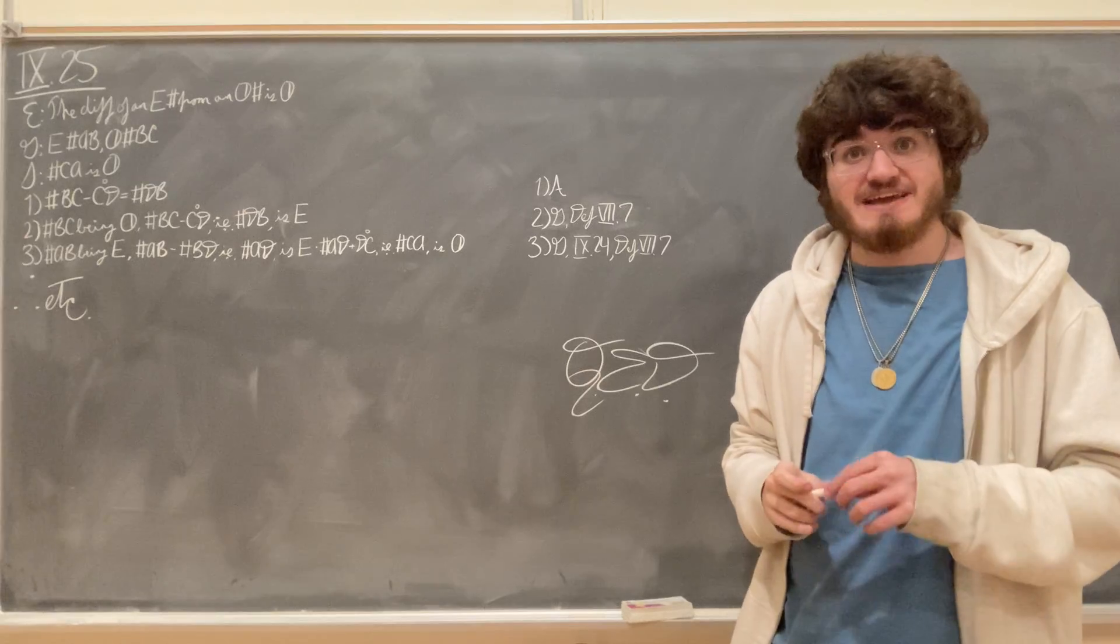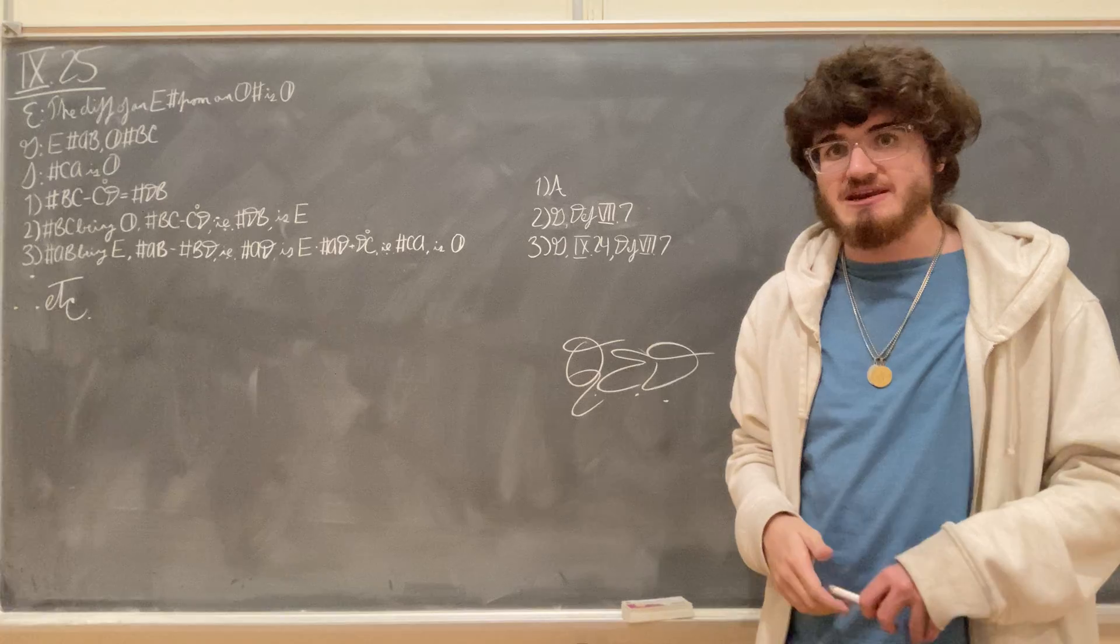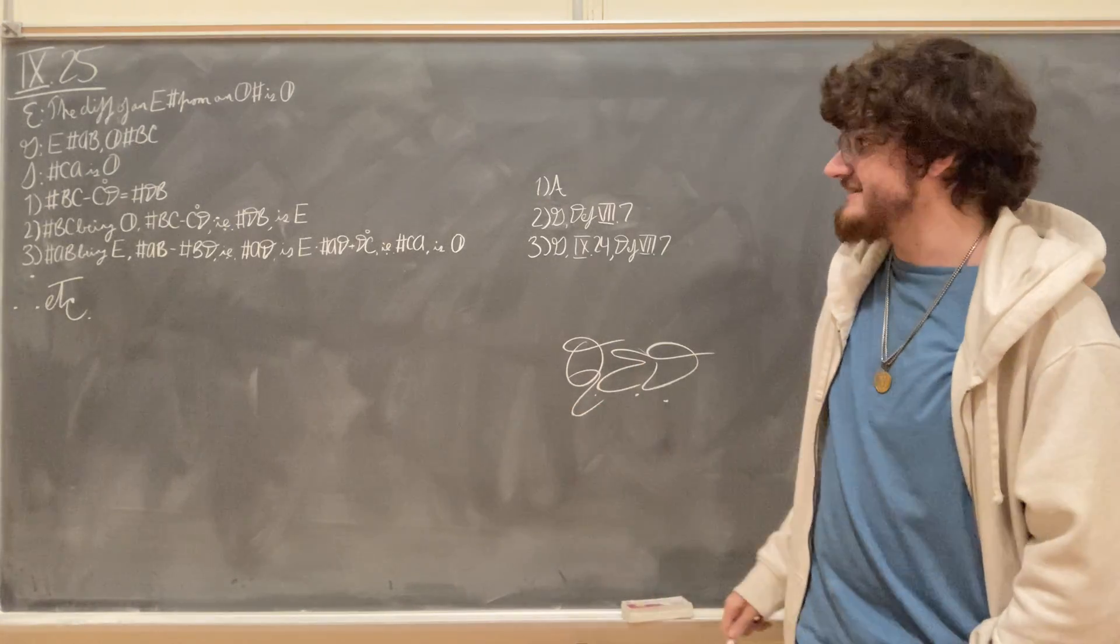Because again, we know by definition, definition 7, that an odd number is always one away from an even number. So if we add a unit onto an even number, we'll get an odd number.